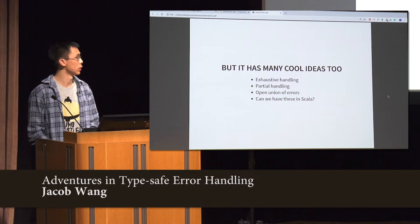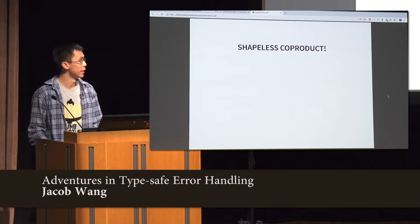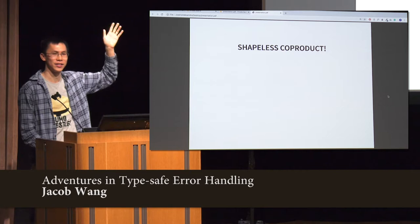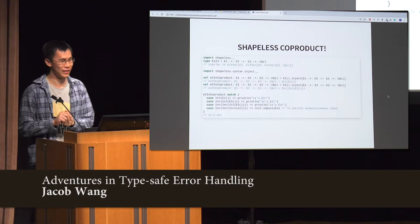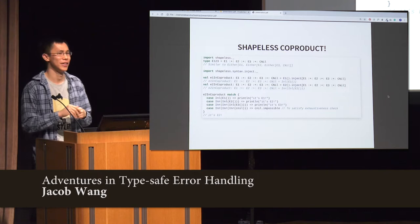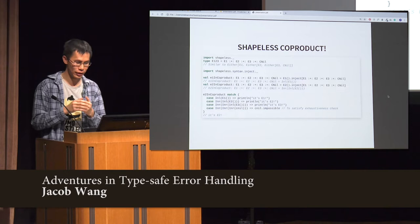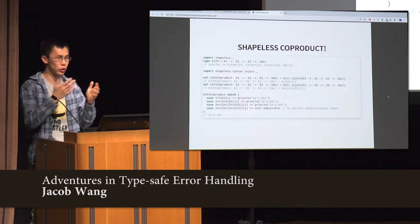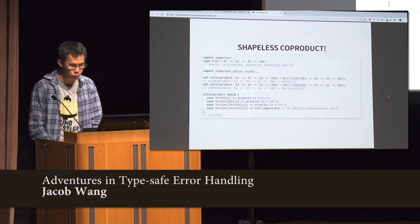The question is: can we have something like this in Scala when it comes to error handling? The first piece of the puzzle is shapeless coproducts. So what are shapeless coproducts? It's a very hard thing to define, but I'll try my best. Think of Either types — you have two possibilities, the left side and the right side. You can think of shapeless coproducts as a nicer way to represent multiple possibilities. So instead of just two, you have a nice way to represent multiple possibilities.